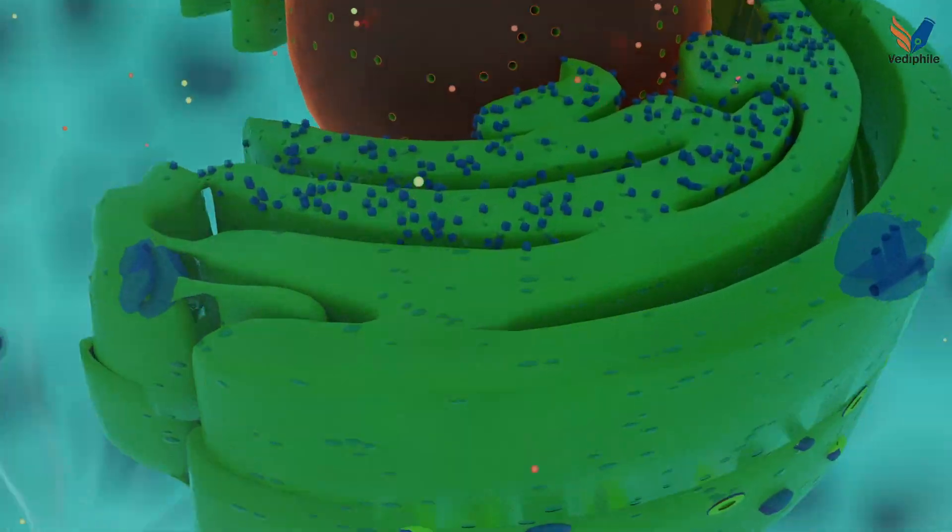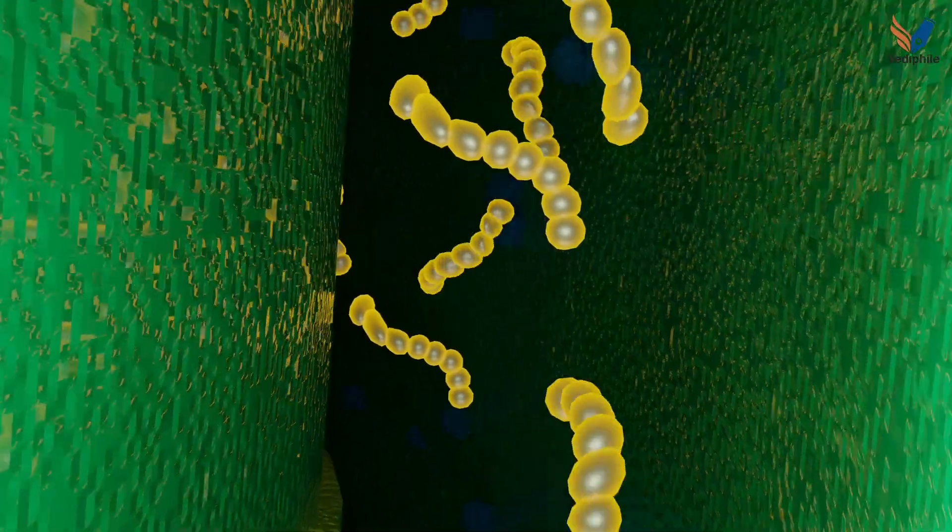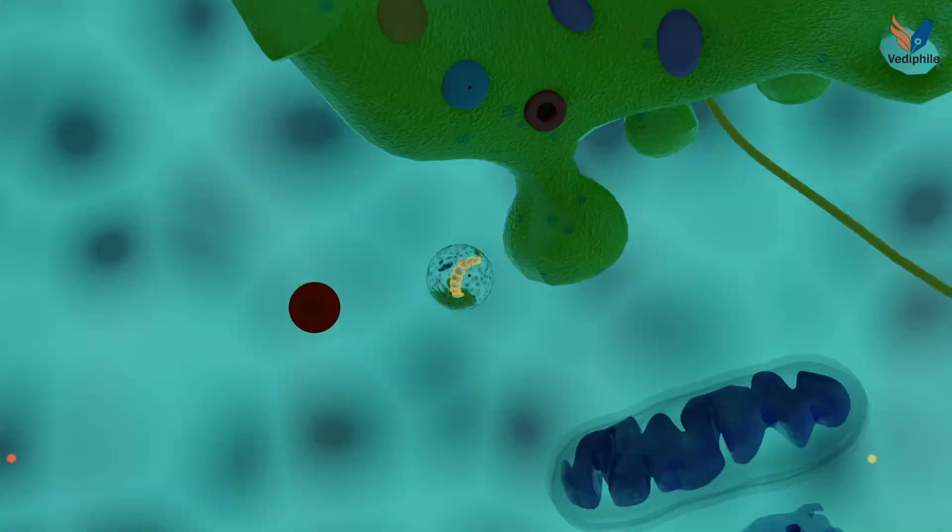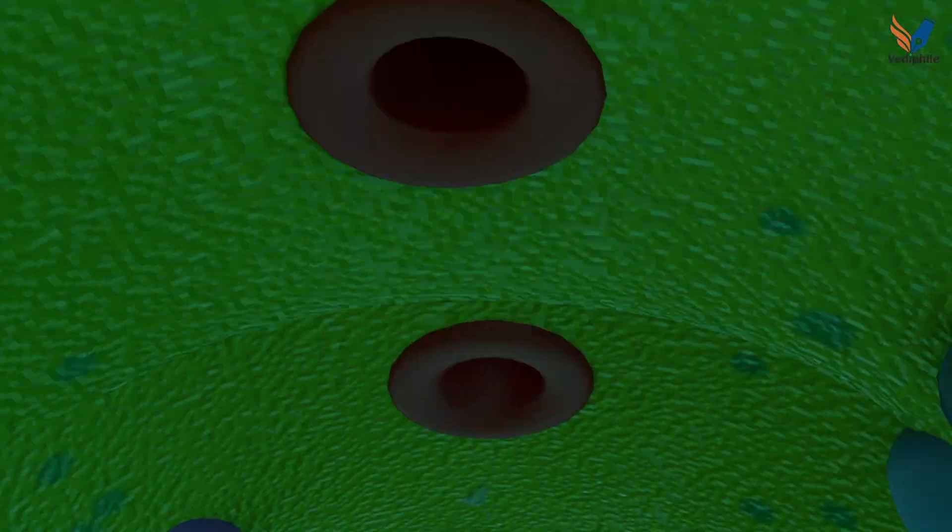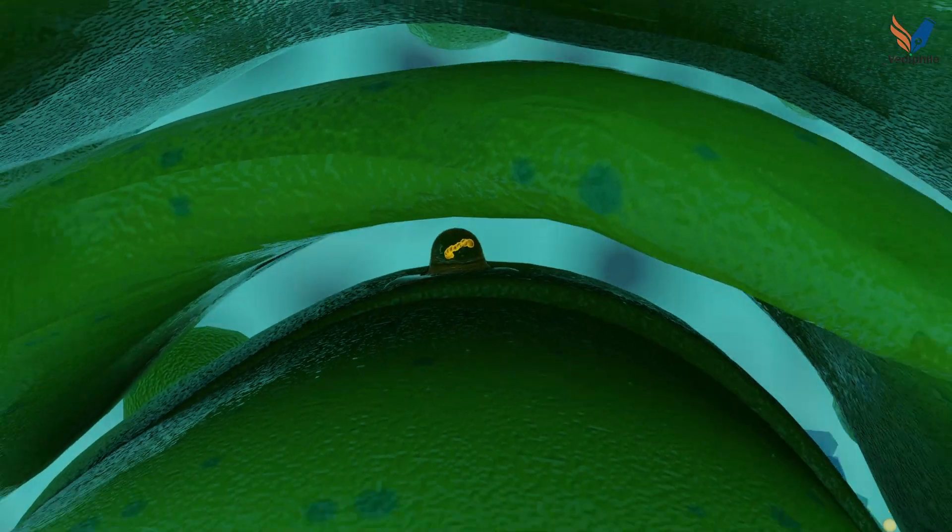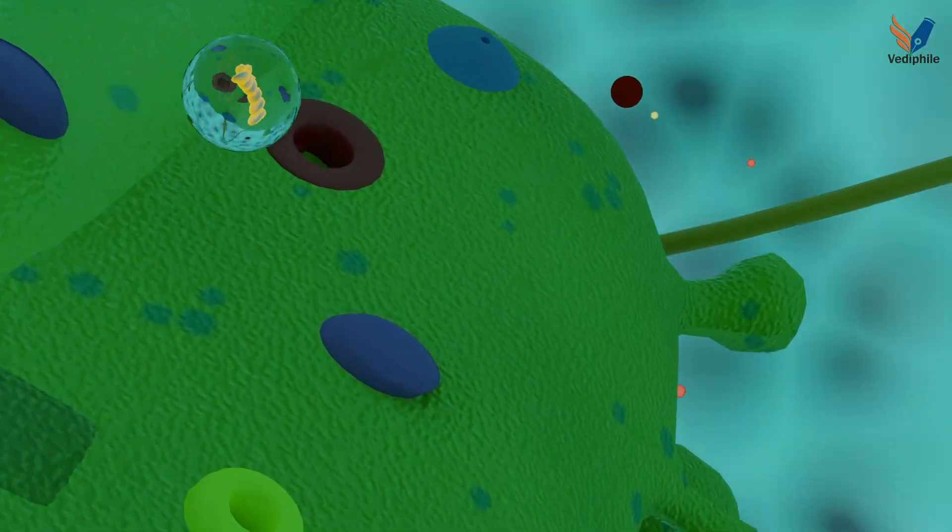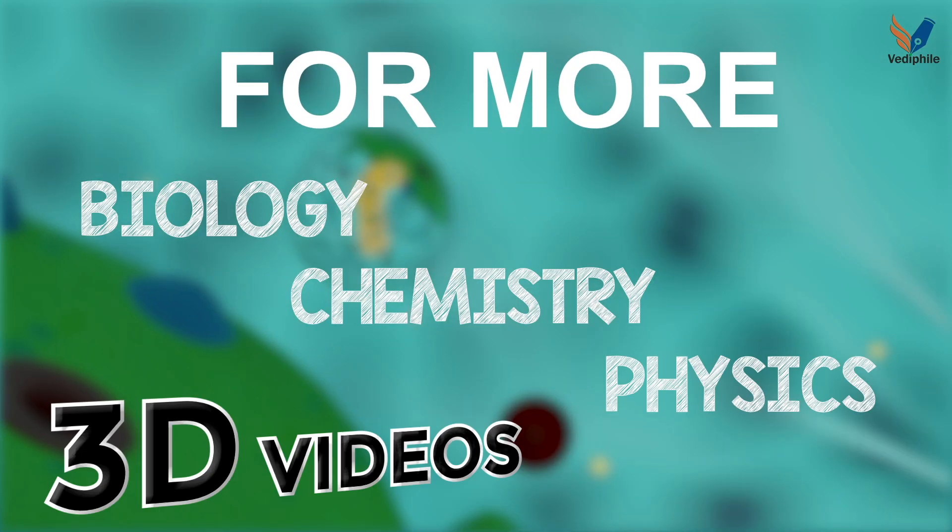In ER lumen, ribosomes form proteins and these proteins are transported to Golgi apparatus. These proteins from Golgi complex are then transported to lysosome, ribosome, or outside of the cell. For details of this topic, like and share our Facebook and Instagram handle.